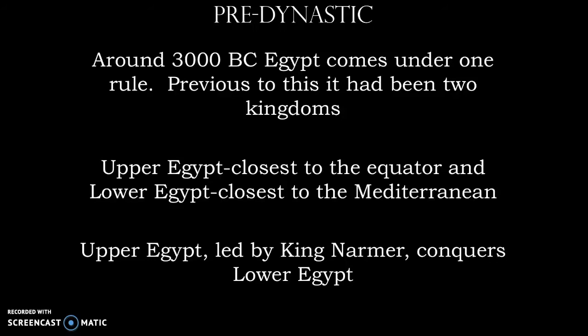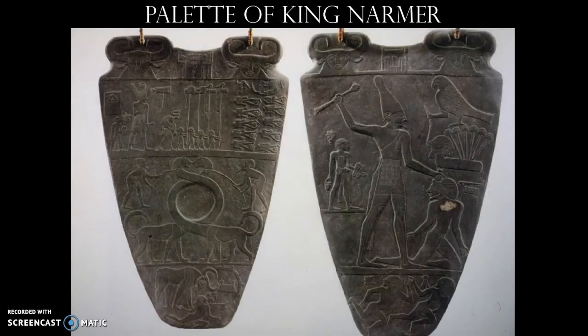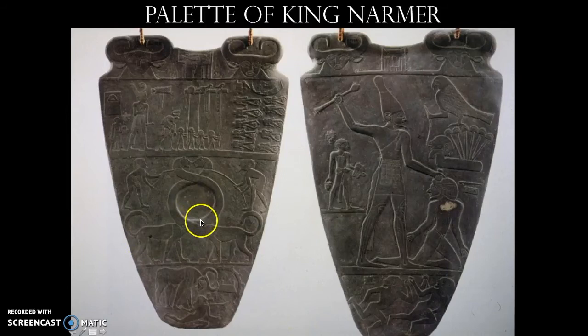Previous to this, Egypt had been two kingdoms — the upper and lower parts. Now Upper Egypt, led by King Narmer, conquers Lower Egypt. This is a really important artwork you're going to see throughout studies of art history. This is called the Palette of King Narmer. The left-hand image is the upper part of the palette and the right-hand image is the lower part. It's not too large — it kind of looks like a shield but it isn't. It is a palette where you would mix eye makeup in the concave center, right between the necks of the intertwined animals.